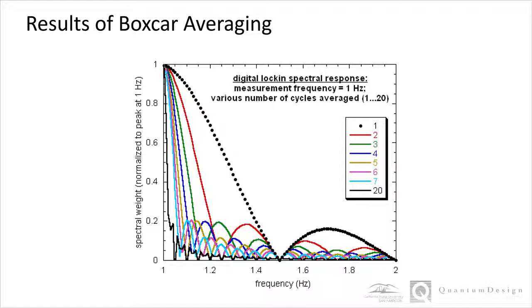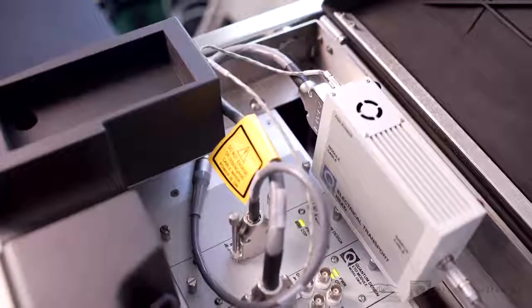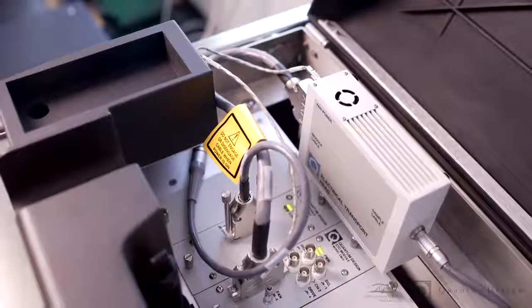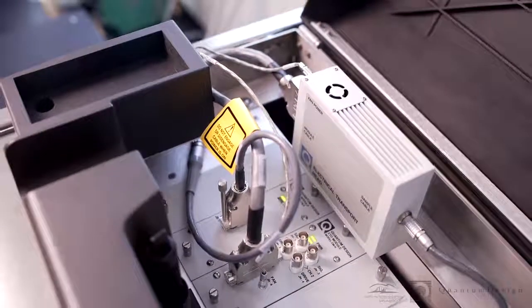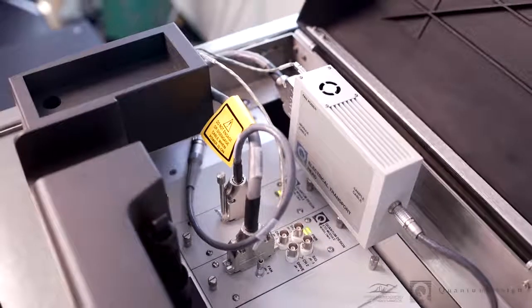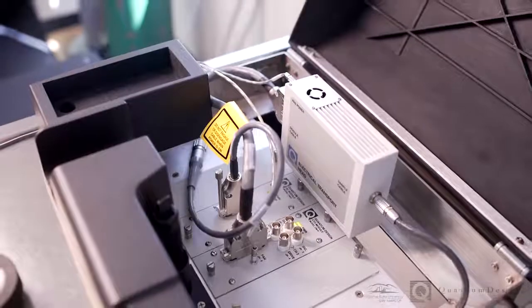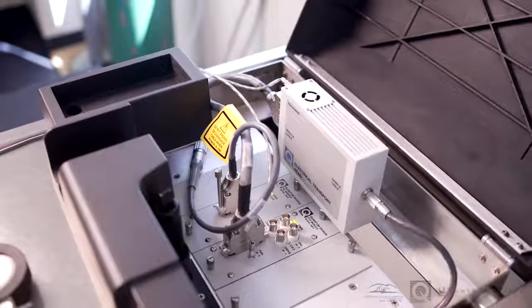The ETO possesses two measurement channels with their own dedicated electronics, meaning that two sets of precision current sources and voltmeters are individually running at all times. The current source's maximum output is 100 milliamps with 1 nanoamp minimum precision, and the output modes include DC or AC, with a frequency range between 0.1 Hz to 200 Hz.